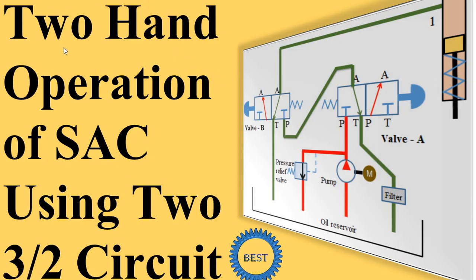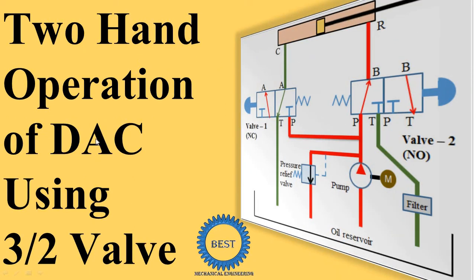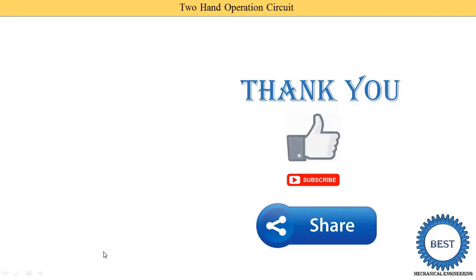There are different types of two-hand circuits, for which I have made separate videos. The link is provided in the description, or you can go to the playlist — the link is on the top right of your screen. The first type is two-hand operation of a single acting cylinder using two 3/2 directional control valves. The second is two-hand operation of a single acting cylinder using a twin pressure valve. The third type is two-hand operation of a double acting cylinder using 3/2 directional control valves.